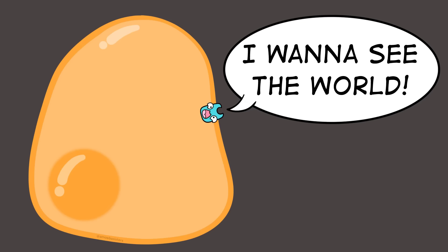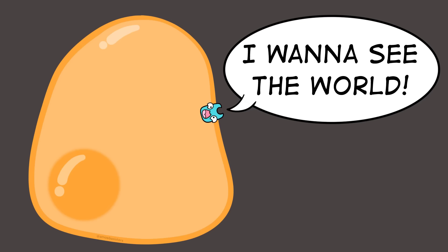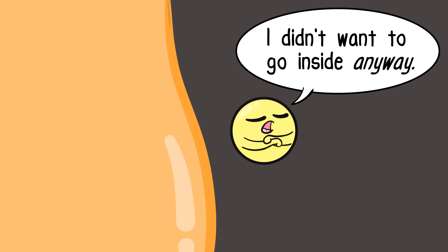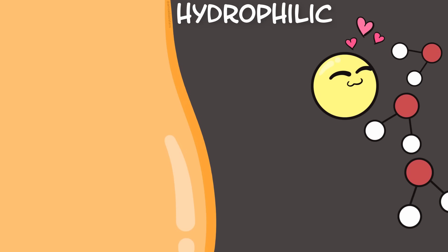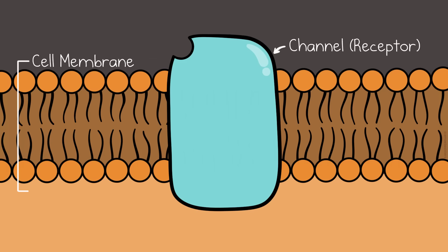But receptors don't have to be inside the cell. Receptors are frequently part of the cell's membrane surface. If a receptor is sitting on the outside of the cell membrane, then the ligand doesn't have to come in. In fact, there could be properties of the ligand — like being hydrophilic — that may not allow it to pass through the membrane.